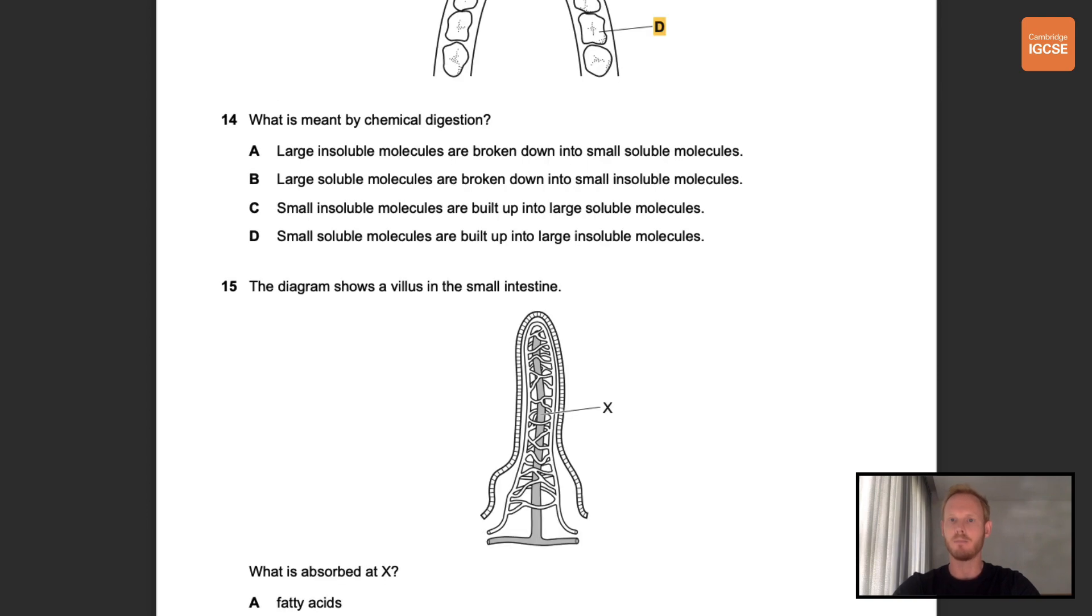Number 14. What is meant by chemical digestion? The correct answer here is A. Chemical digestion is the breakdown of large insoluble molecules into small soluble molecules that can be absorbed in the small intestine.